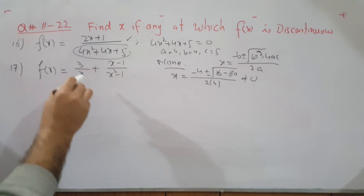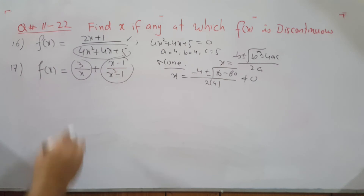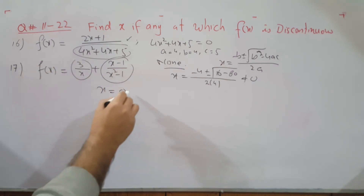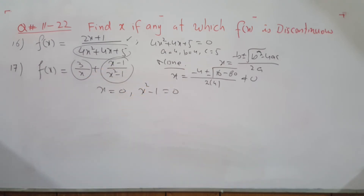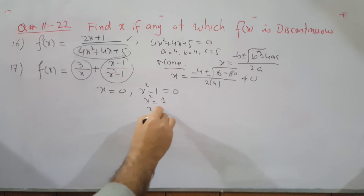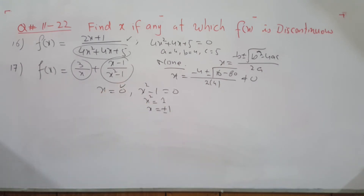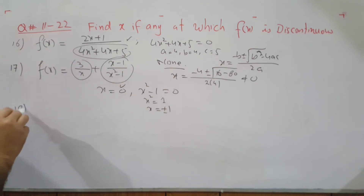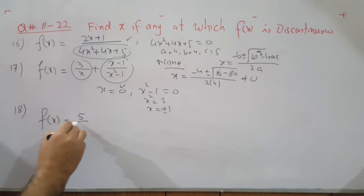Question 17 involves the addition of two functions. The first part is discontinuous at x equals 0. The second part has denominator x²−1, so set x²−1 equals 0: x² equals 1, giving x equals ±1. Therefore you have three discontinuous points: x equals 0, x equals 1, and x equals −1.